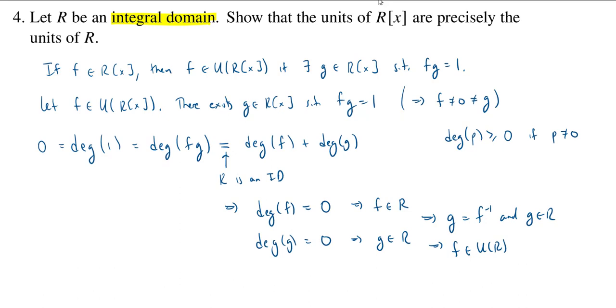So, we started with an element in the units of Rx. And we concluded that that element was actually a unit of R. So, this implies that the units of the polynomial ring are contained in the units of R.